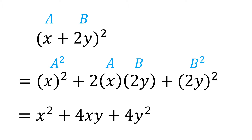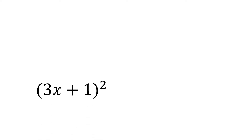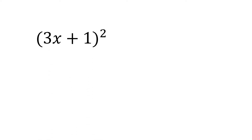Therefore, (x + 2y) squared is equal to x squared plus 4xy plus 4y squared. Now let's say we have (3x + 1) squared. In this case, we have a as 3x and b as 1.